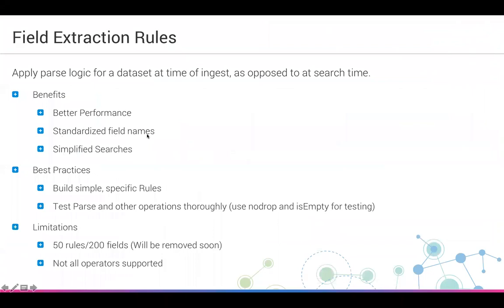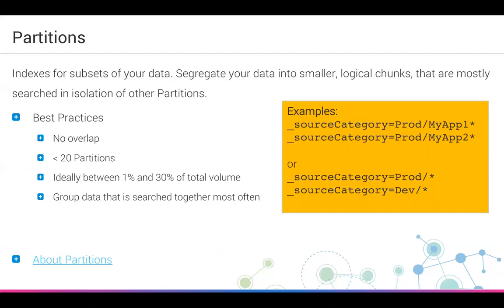Benefits of field extraction rules: better performance since you're not parsing at query time; standardized field names; simplified searches since you don't need all that inline parsing. Best practices: build simple but very specific rules, and always test your rules before saving — you can use the 'isempty' operator to test corner cases. One current limitation is a maximum of 50 rules or 200 fields — this should be removed soon. Also, not all operators are supported in field extraction rules; check the documentation for the list.